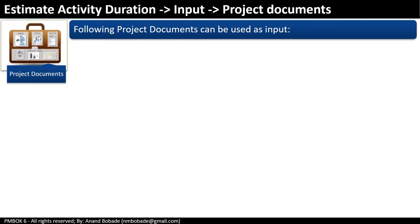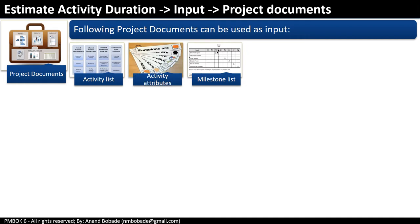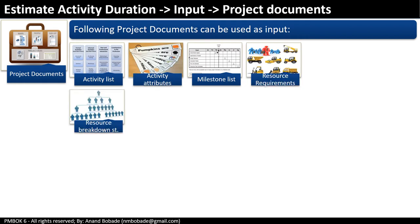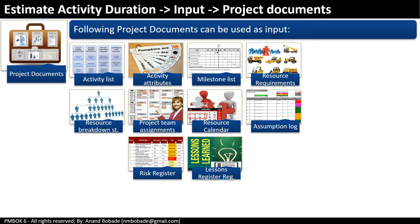The next input is project documents. These are mostly outputs of the previous Define Activities process. They include: activity list, activity attributes, milestone list, resource requirements, resource breakdown structure, project team assignment, resource calendar, assumption log, risk register, and lessons learned register.